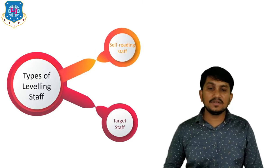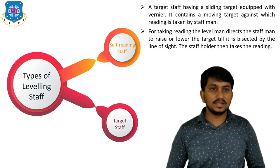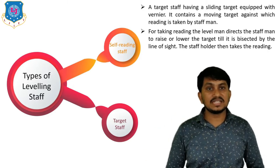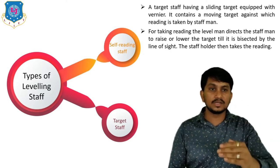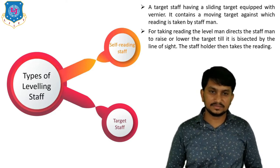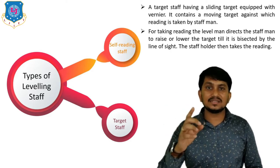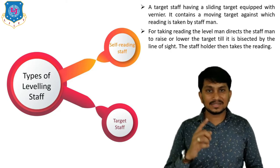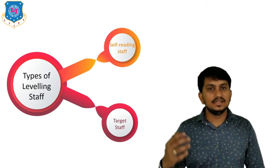The second type of leveling staff is the target staff. A target staff has a sliding target; readings are taken by the staff man holding the leveling staff. The level man directs the staff man to raise or lower the target until it is bisected by the line of sight, then the staff holder takes the reading. The difference is that in a self-reading staff the person at the instrument takes the reading, while in a target staff the person at the staff takes the reading.